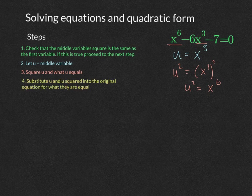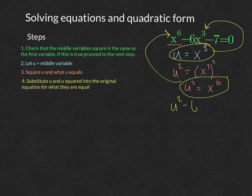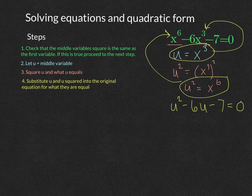Step four is to substitute u and u squared back into the original equation. x to the sixth is what u squared equals, so instead of x to the sixth I write u squared. Then minus six — u cubed is equal to u — so it becomes u squared minus 6u minus 7 equals zero. Now we have a quadratic equation instead of an equation in x to the sixth power.